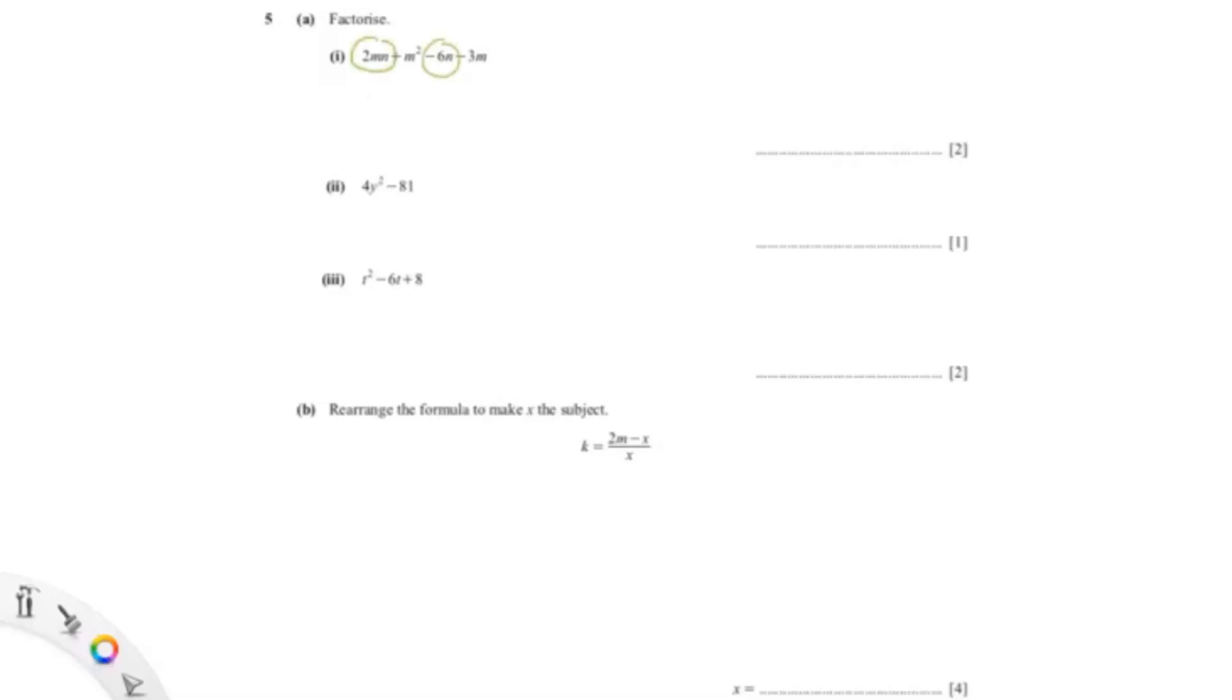For this question, you can see that 2mn and -6n have a common factor of n and 2. m² and -3m have a common factor of m. So first we will factorize these out, so it would be 2n(m-3). So you've already factorized this and this.